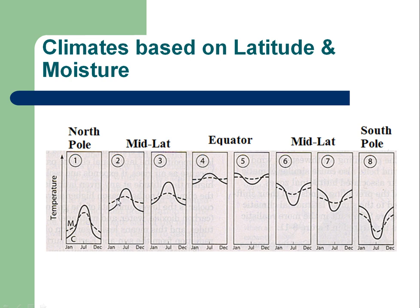The water absorbs a lot of the heat and acts sort of like an insulator, keeping you from getting too hot or too cold — and this happens year-round. Notice in the southern latitudes, if you go from the equator to the south pole, the temperature curves are opposite. This is because when the north has summertime, the south has wintertime.